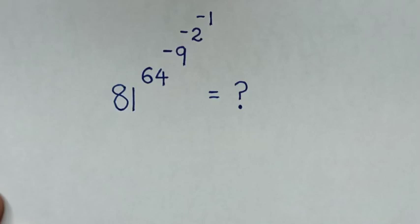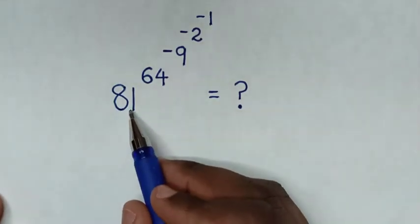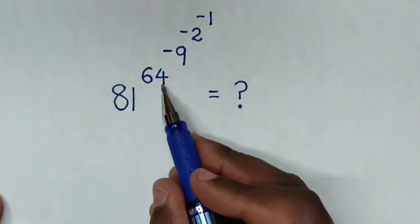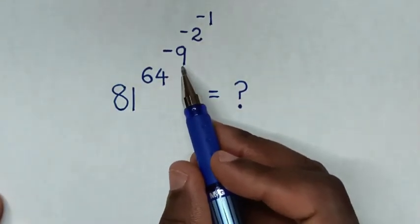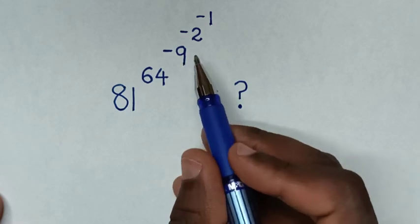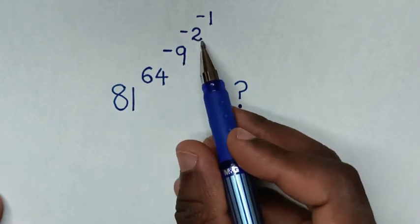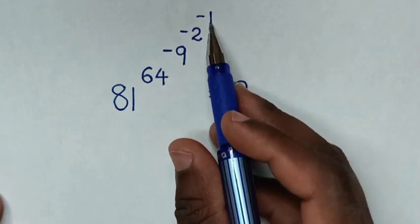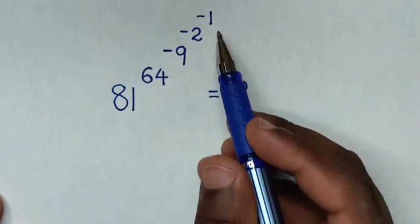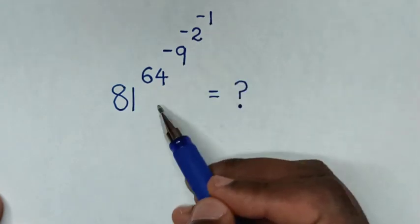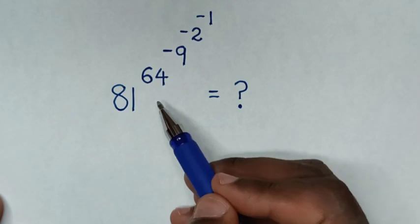Hello. How to solve 81 power of 64, power of negative 9, power of negative 2, power of negative 1. So we solve from top to down.